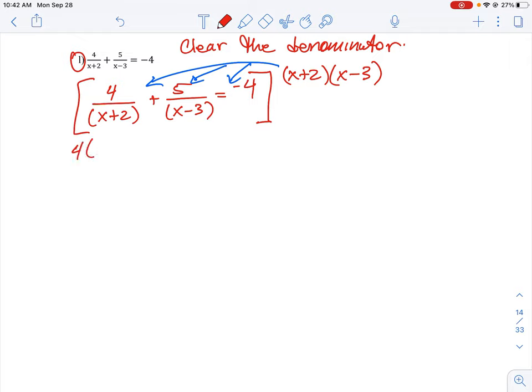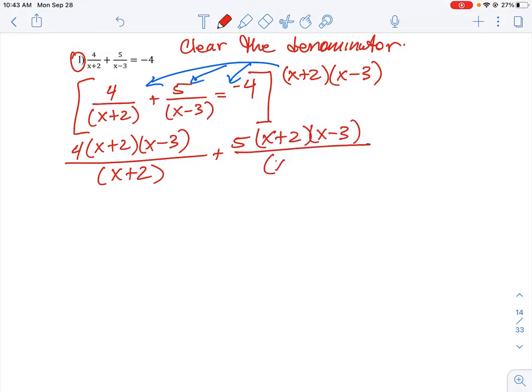So the first term here is 4 times x plus 2 times x minus 3 all over x plus 2. And then we're going to multiply by 5 times x plus 2 times x minus 3 all over x minus 3. And then we're going to have negative 4 times x plus 2 times x minus 3.